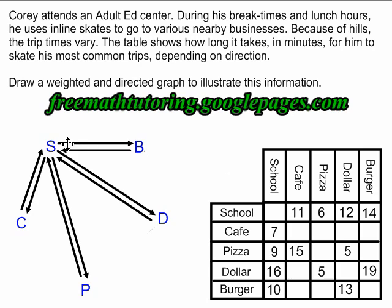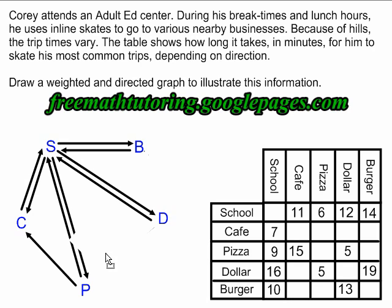And that's what I've done here. I have an arrow going from the school to the burger place, and one going from the burger place back to the school. I do the same thing for the dollar store, the pizza place, and the cafe. But there's a little bit more information in this graph — Corey also rollerblades from the pizza place to the cafe, but he does not rollerblade from the cafe to the pizza place, and that's why this cell is empty. So I have to show that he's going in only one direction between the pizza place and the cafe.